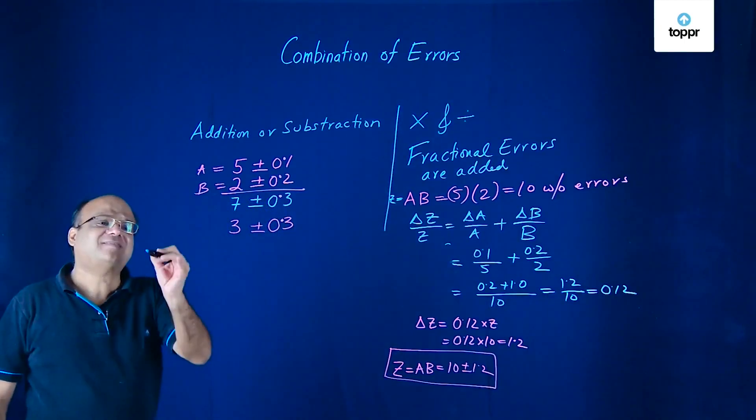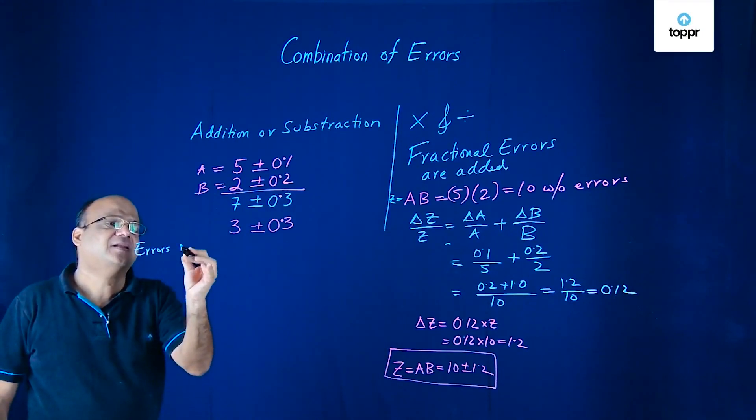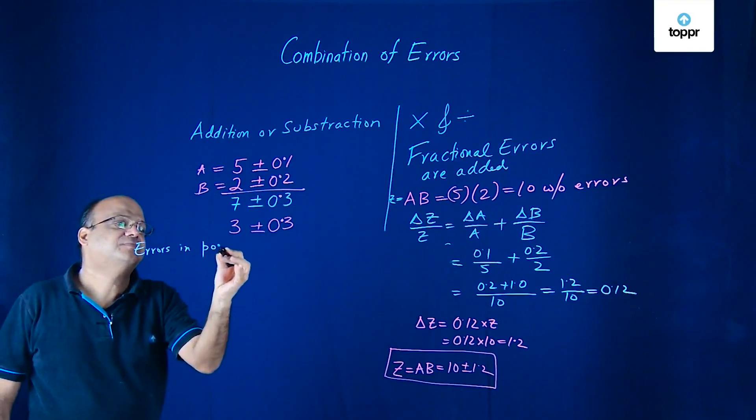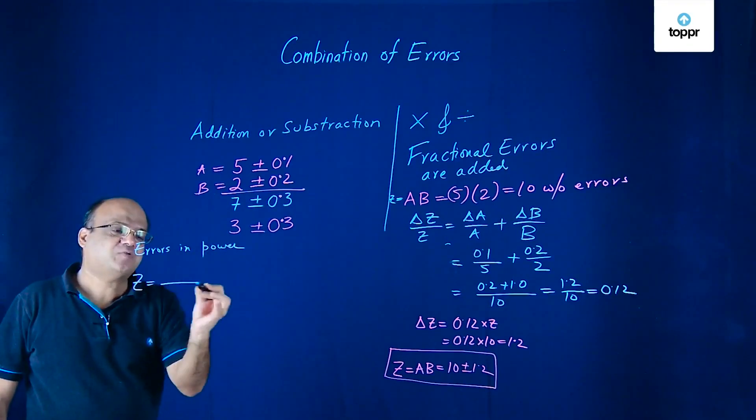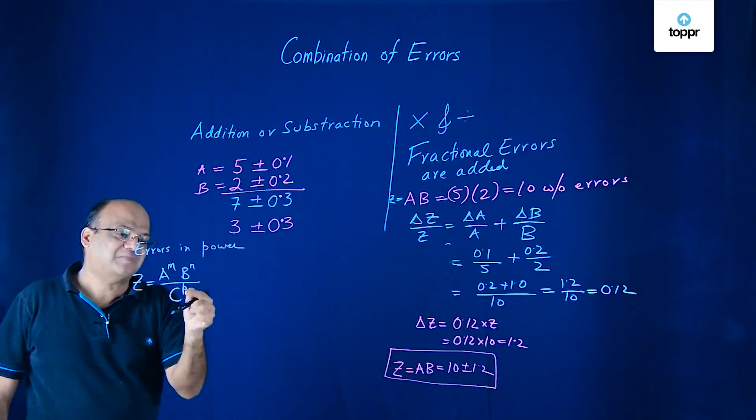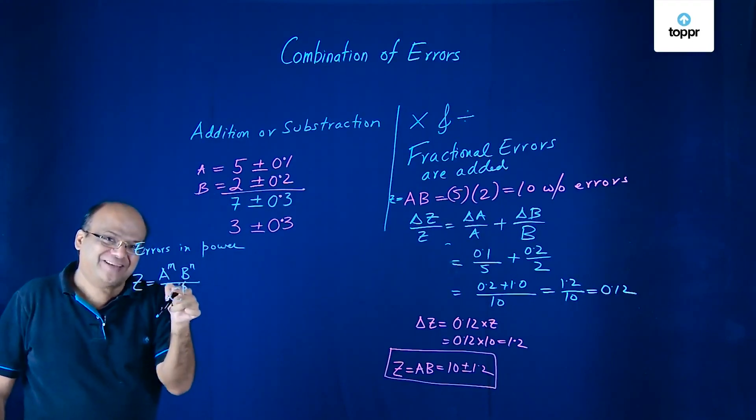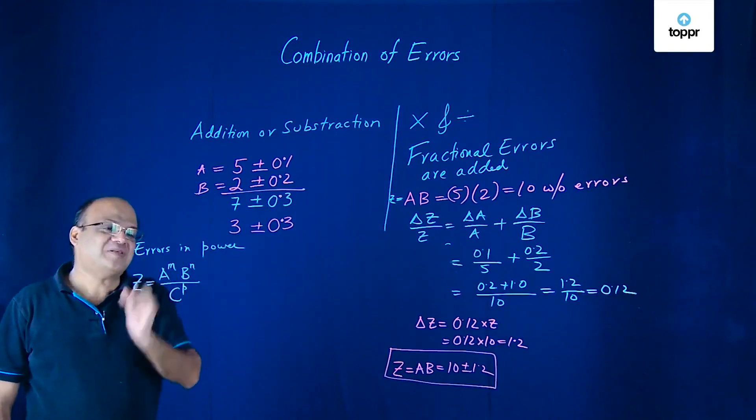Now what about the errors in power? Suppose some Z is A to the power M, B to the power N by C to the power P. I am not adding O here. Why? That looks like 0. So we avoid O.